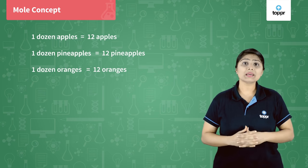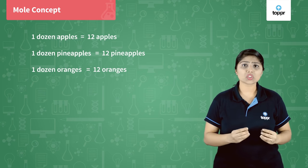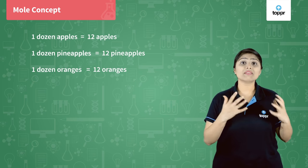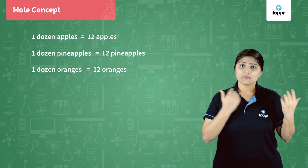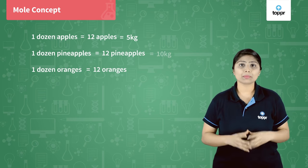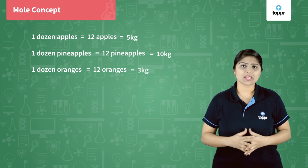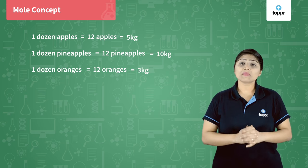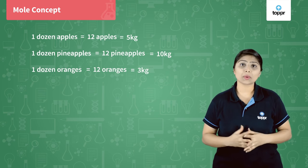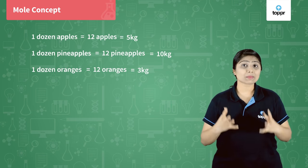But will the mass of twelve apples, twelve pineapples, and twelve oranges be equal? No. The mass of twelve apples might be five kgs, the mass of twelve pineapples might be ten kgs, and the mass of twelve oranges might be three kgs. So when we say one dozen, the number remains constant — twelve — but the mass depends upon which substance we are taking.